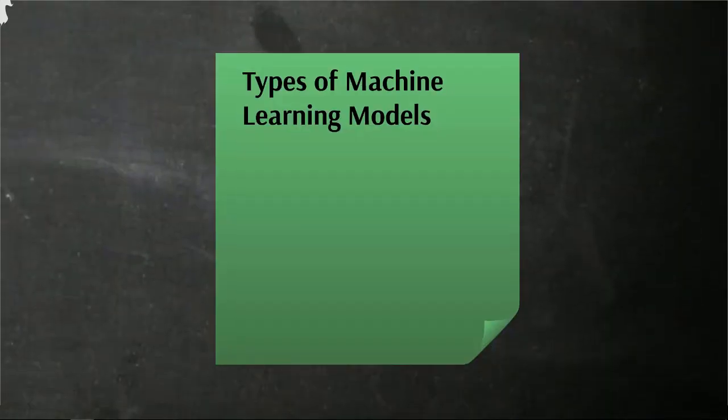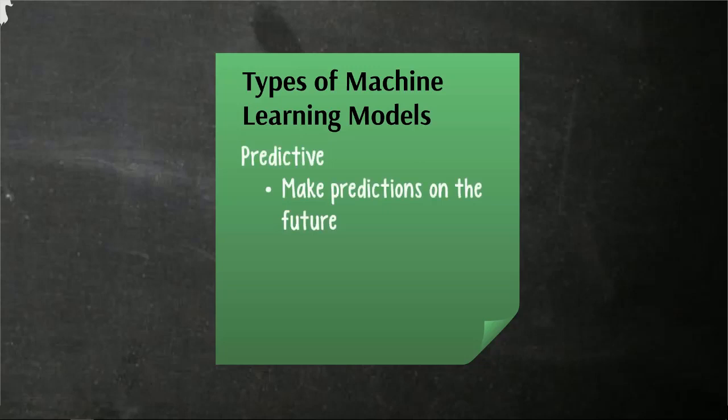So let's keep going. There are a couple main types of machine learning models that can be differentiated. So the first is predictive. About half the models are going to be predictive in that they are trying to make predictions on the future.